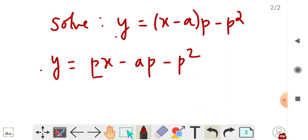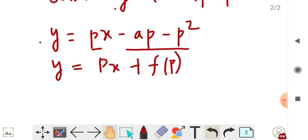This can be made into a Clairaut's form. Clairaut's formula is y equals px plus f of p. So f of p is minus ap minus p squared. This can be written as y equals px minus p taken outside, so a plus p into p. This is f of p, which is of Clairaut's form.